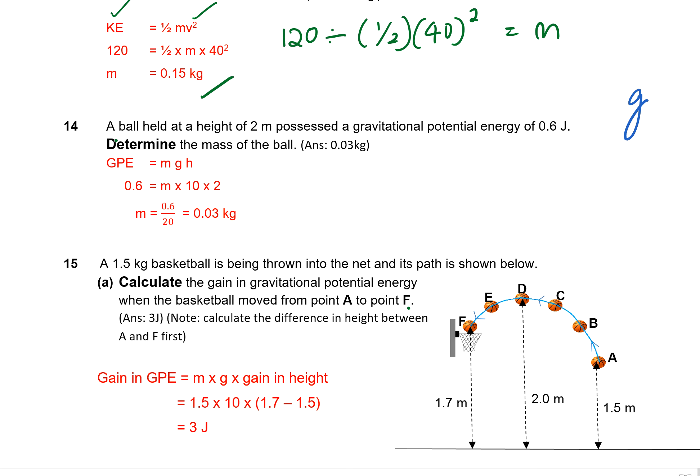Question 14. Question 14 is a question on gravitational potential energy. And you are required to calculate the mass. So again, step 1, I'll write down the formula for GPE. Substitute what I know, but I do not know the mass. So then it will be 0.6 divided by 10 times 2. So I'll get 0.03 as the answer.